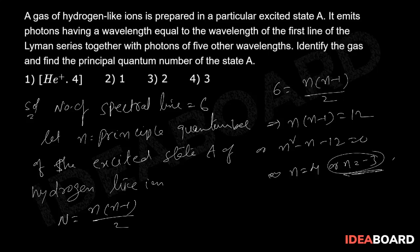So this N equals minus 3 is not possible. So N equals 4. So the correct option is given by first one.